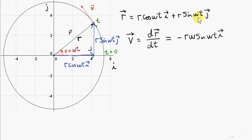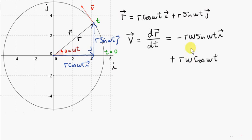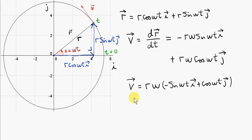Next, we differentiate the j component, r sine omega t. The derivative of sine is cosine, and by the chain rule differentiating omega t gives omega, so we multiply by omega. We can then factorize r omega out of the vector expression and we get this result. This r omega should be familiar — this is what we saw in the very first video; this is the magnitude of the speed.